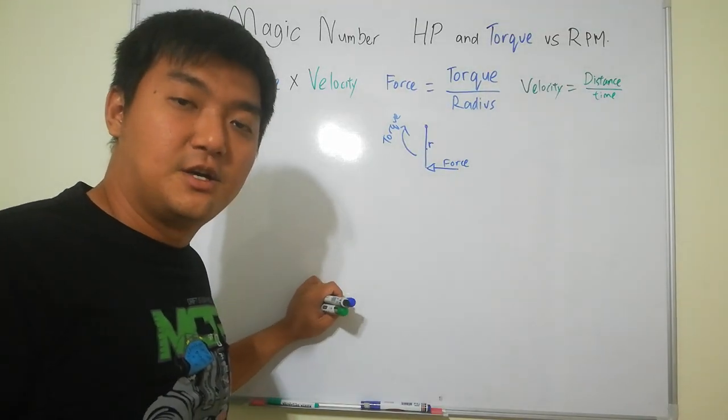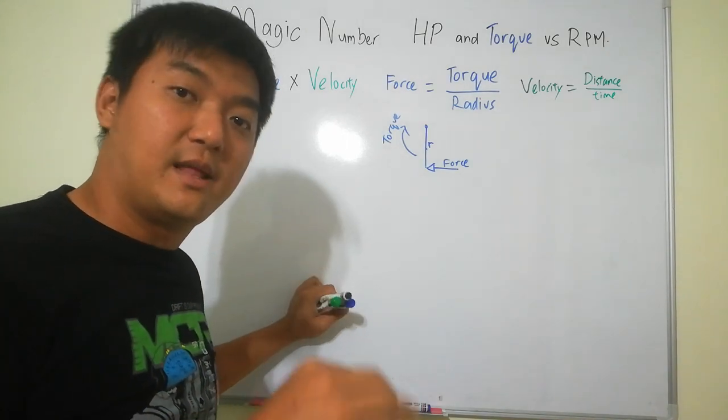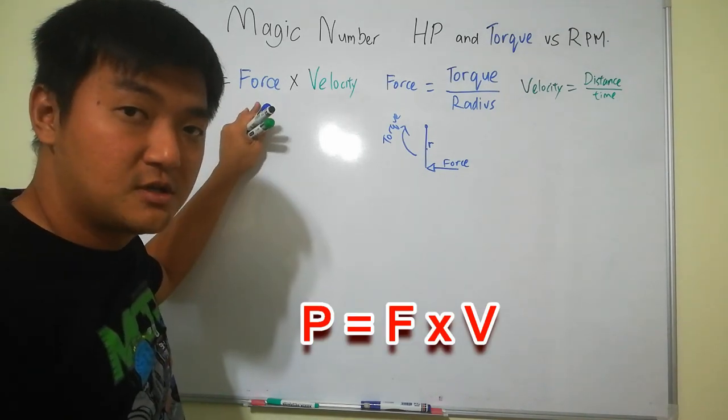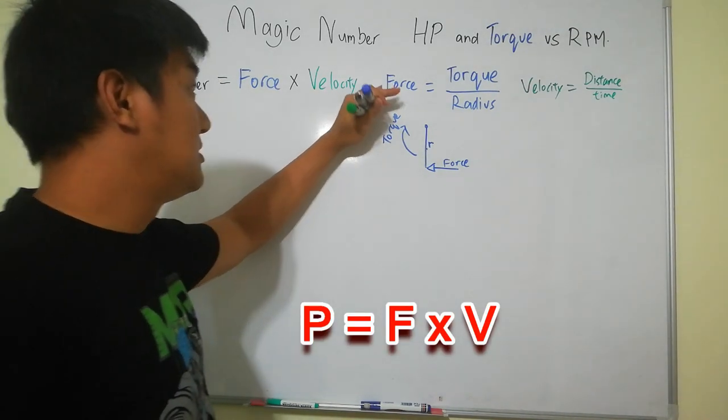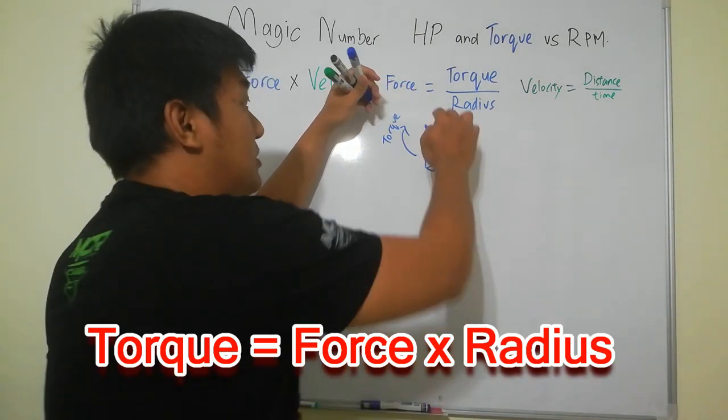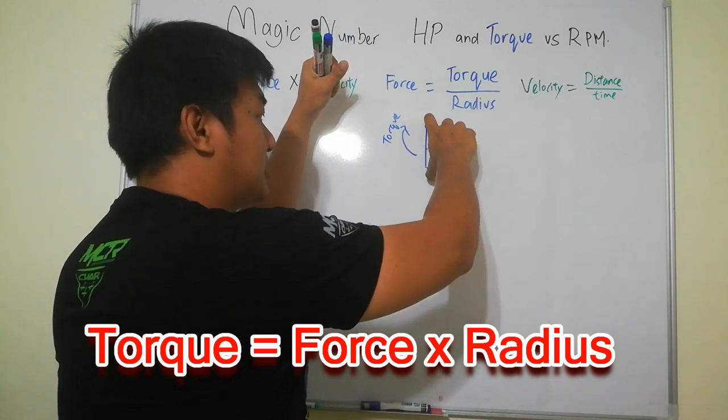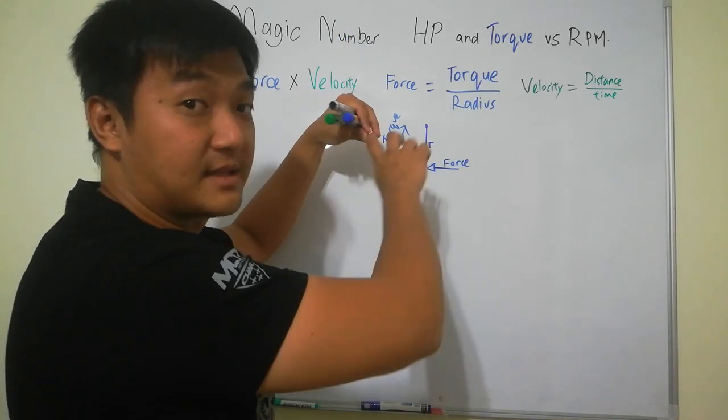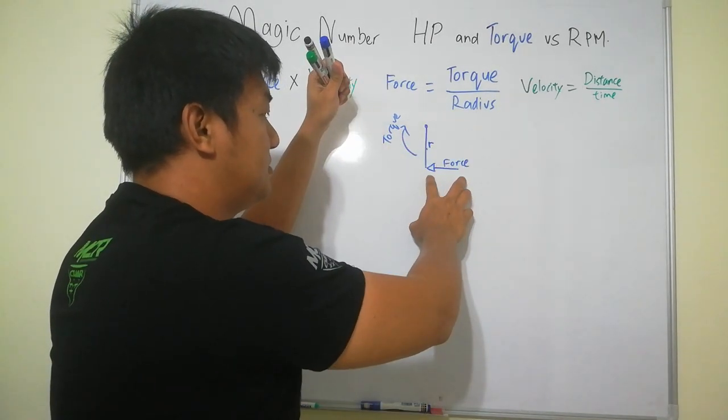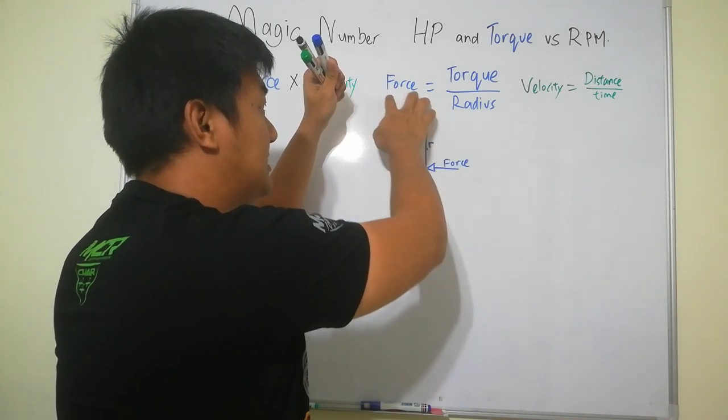Okay guys so the first thing is we need to go through some of the basics how to calculate power. So power is equals to force times velocity. The force you can say that the force is equals to torque divided by radius because how much torque you are turning a nut or you are turning a tire is equals to the force times the radius.